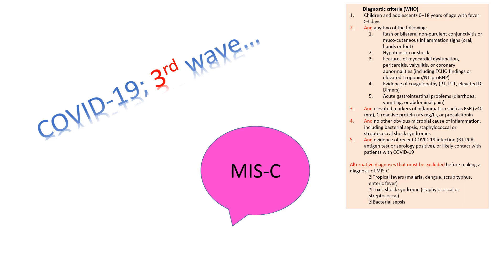And any two of the following five features indicating systemic involvement: rash or bilateral non-purulent conjunctivitis or mucocutaneous inflammatory signs like oral, hands, and feet changes; hypotension or shock; features of myocardial dysfunction, pericarditis, valvulitis, or coronary abnormalities including echo findings, or elevated troponin and anti-proBNP as markers of myocardial dysfunction.